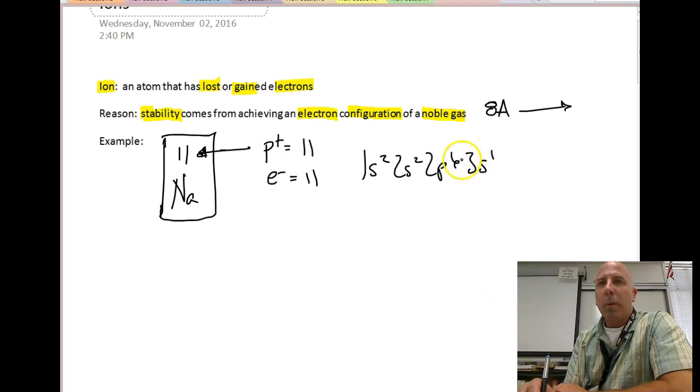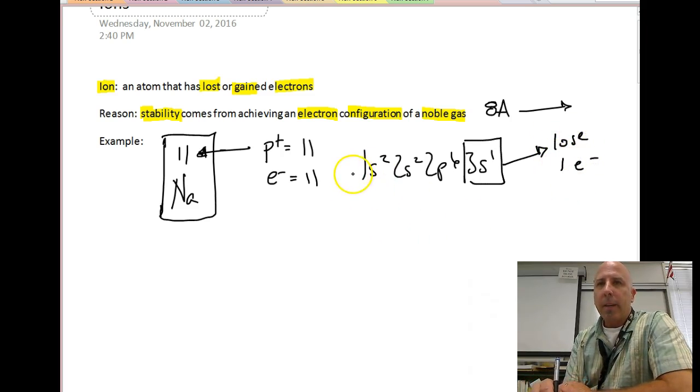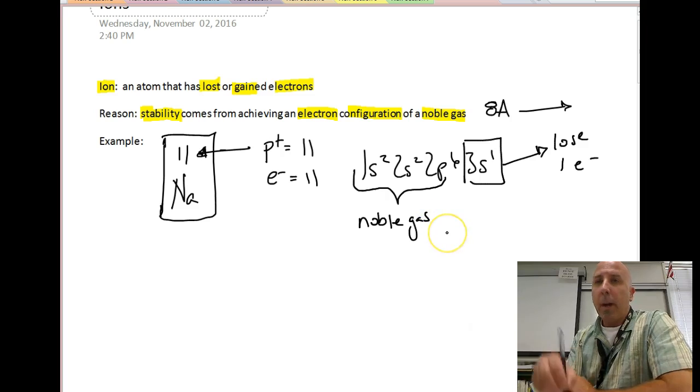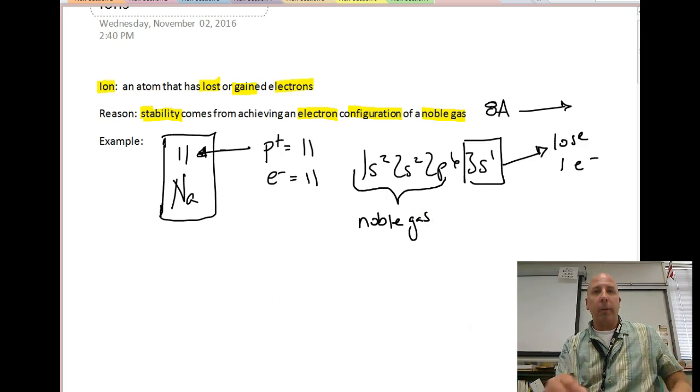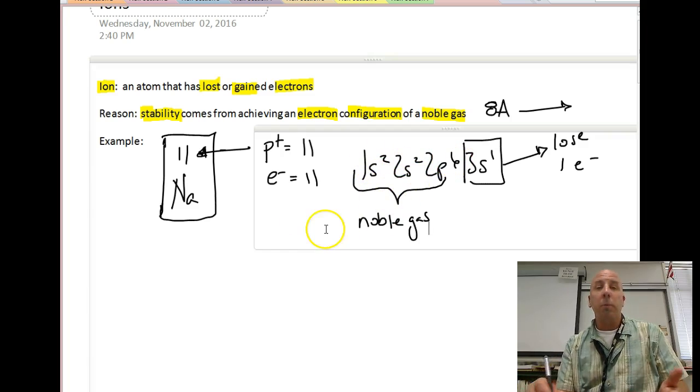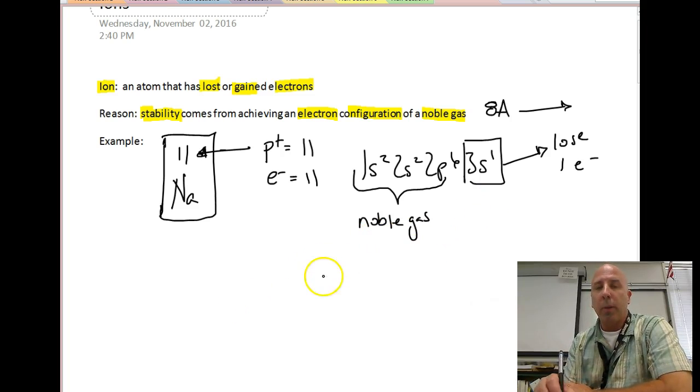So what will happen is sodium will actually give away or lose one electron. Once it does that, it then has the electron configuration of a noble gas. It does not become that noble gas, it just has an electron configuration of that noble gas, that noble gas being atomic number 10, which would be neon. That allows it to be much more stable.